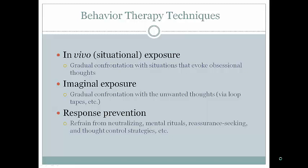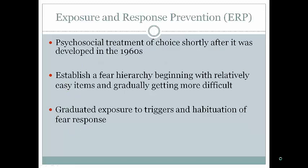Imaginal exposure involves gradual confrontation of unwanted thoughts via tapes the person listens to repeatedly. The response prevention component involves refraining from neutralizing mental rituals, reassurance-seeking, or thought-control strategies. For a washer, you'd expose them to germs — touching toilets, sticking hands in garbage cans — and then prevent them from washing. They must sit with the anxiety. This is done on a hierarchy, starting with lower-anxiety items and culminating in higher-level ones.